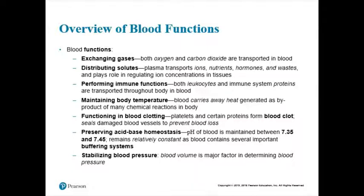Because your plasma has buffers dissolved in it, your blood can help you control your acid-base levels and maintain acid-base homeostasis. From our heart and blood vessel chapters, how much blood you have — your blood volume — will affect blood pressure. The higher the blood volume, the more blood you have to push on blood vessels, the higher the pressure will be. So blood as a function helps control or stabilize your blood pressure simply by controlling how much blood there is.